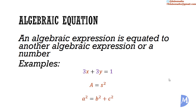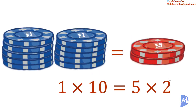And a squared is equal to b squared plus c squared. To introduce the concepts that apply to equations, I will start with a very simple example — one we are familiar with — using $1 and $5 chips. The blue chips are $1 chips and the red chips are $5 chips. We have 10 $1 chips and 2 $5 chips, so 1 by 10 gives us $10, and 5 by 2 also gives us $10.